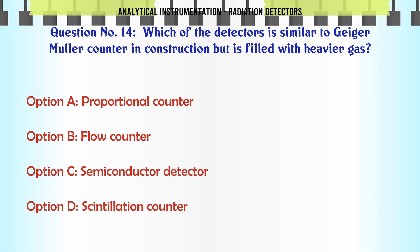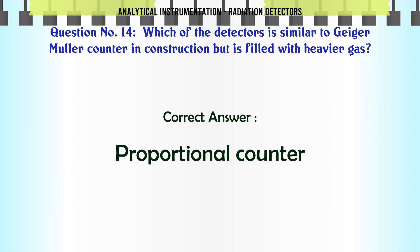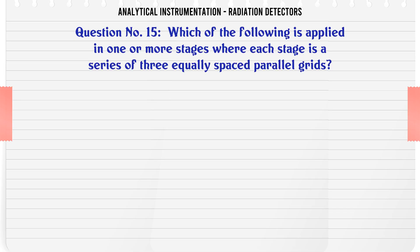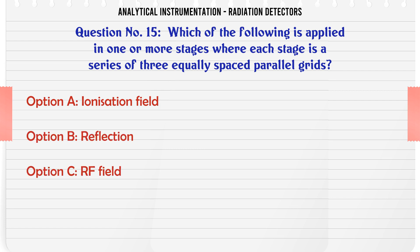Which of the detectors is similar to Geiger-Müller counter in construction but is filled with heavier gas? A. Proportional counter. B. Flow counter. C. Semiconductor detector. D. Scintillation counter. The correct answer is Proportional counter.